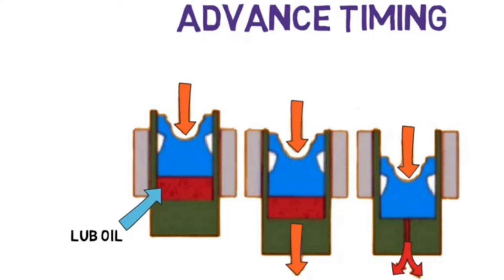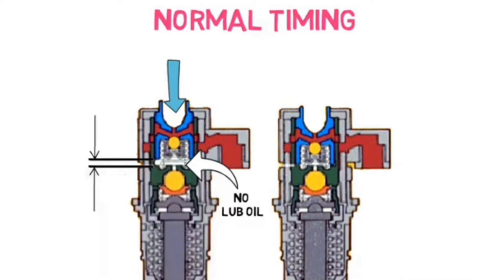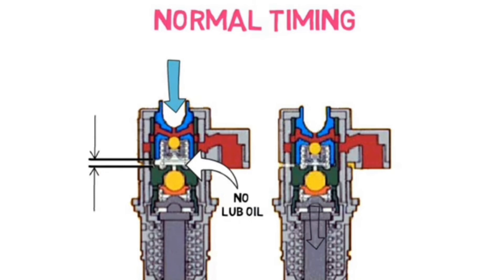When the engine is starting, the loop oil pressure is 10 psi, so the HTC injector works as advanced timing. After the engine is running, the loop oil does not come into the HTC injector through the HTC valve, so it works as a normal injector — just like normal timing. This is the function of the HTC injector.